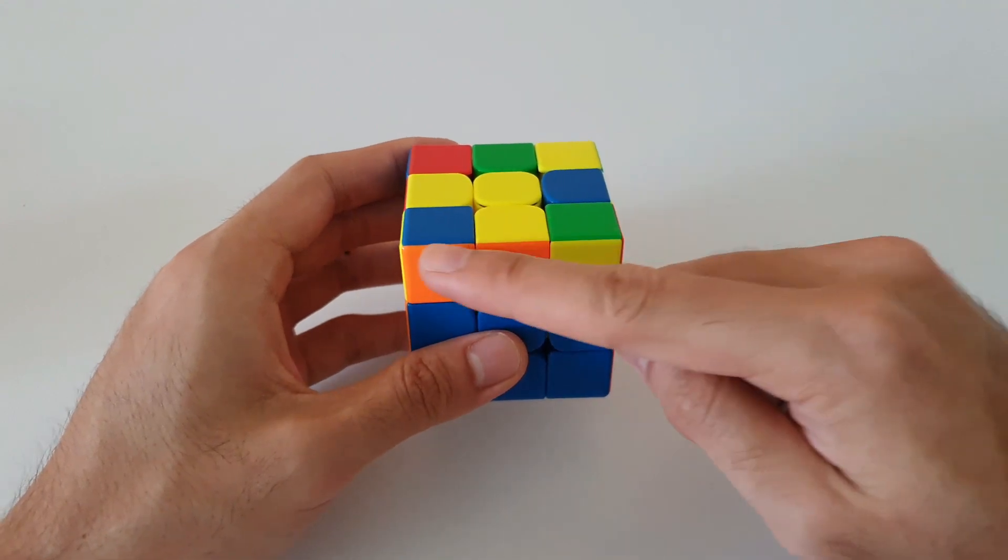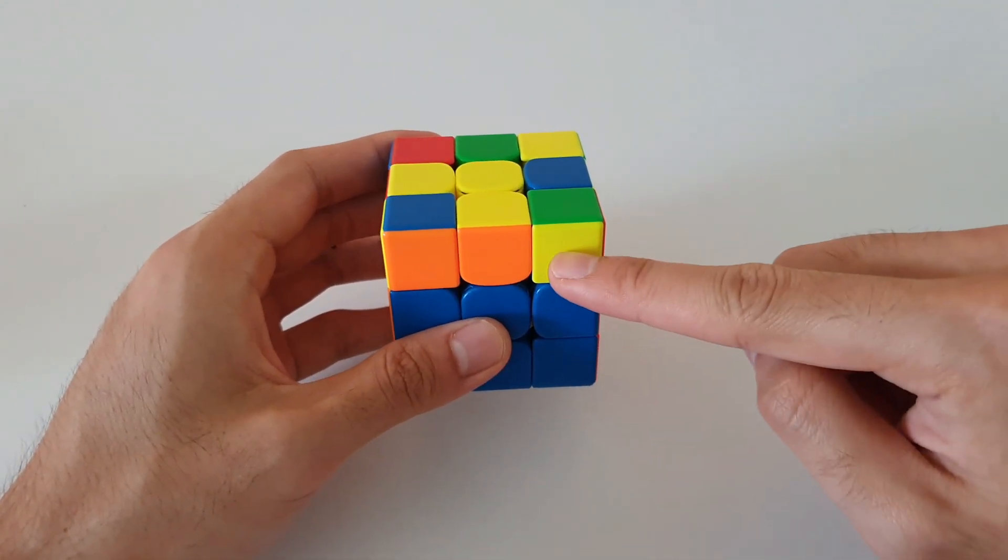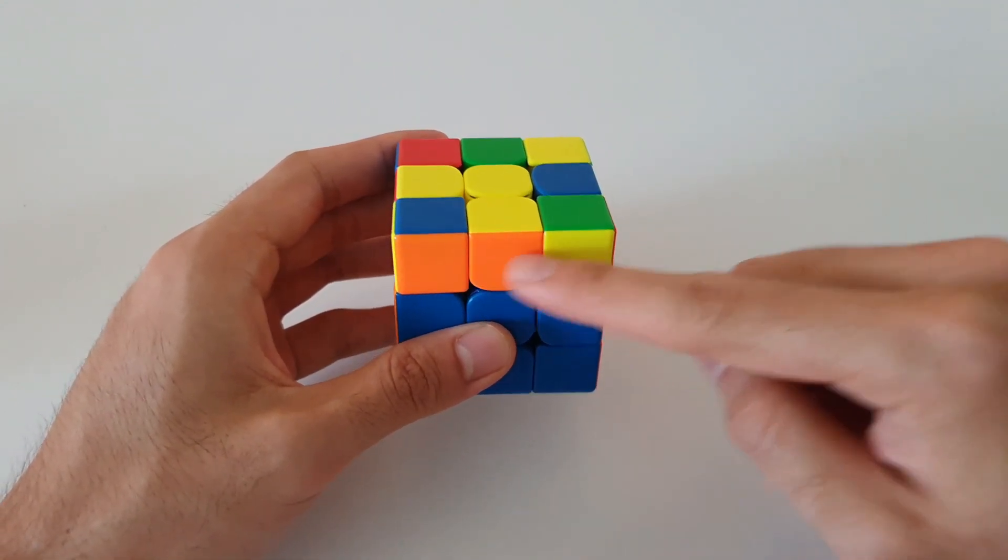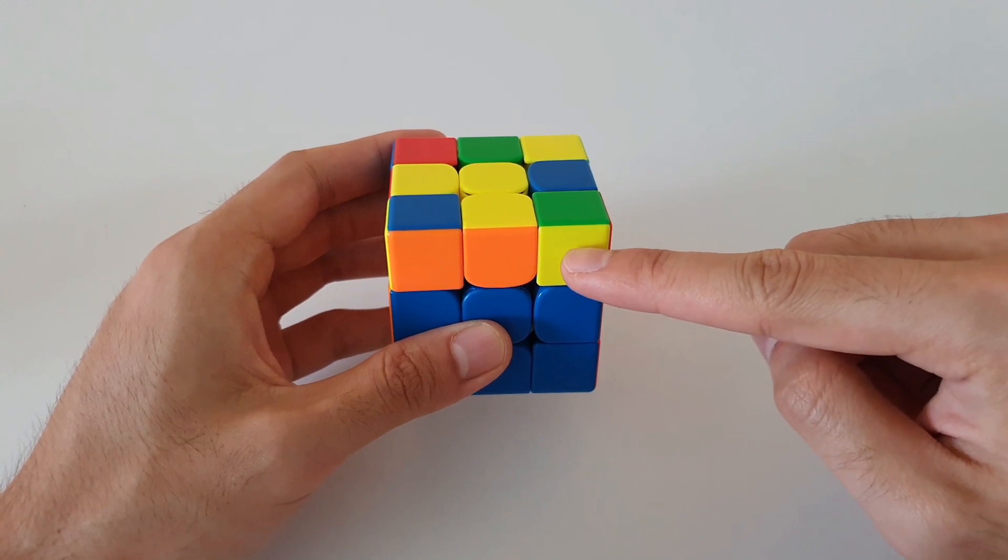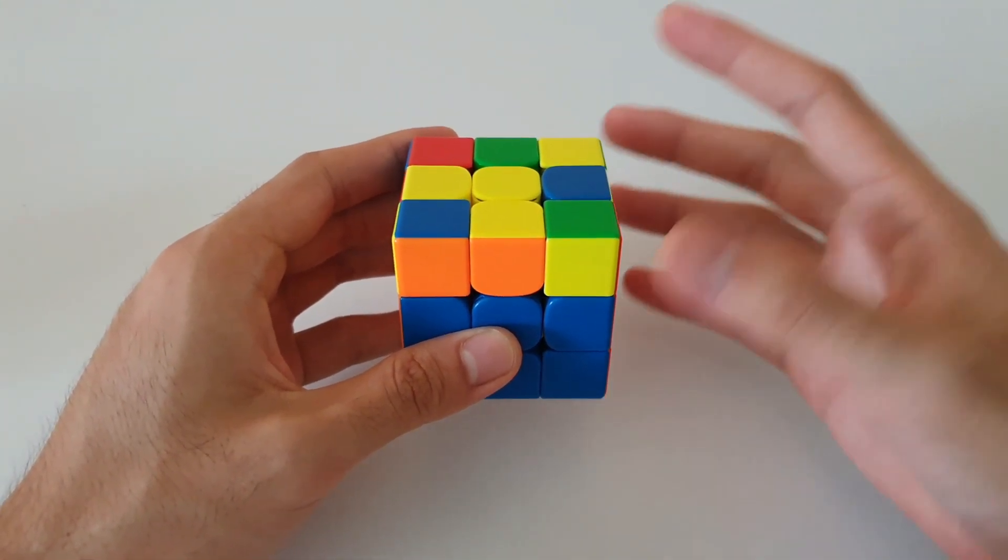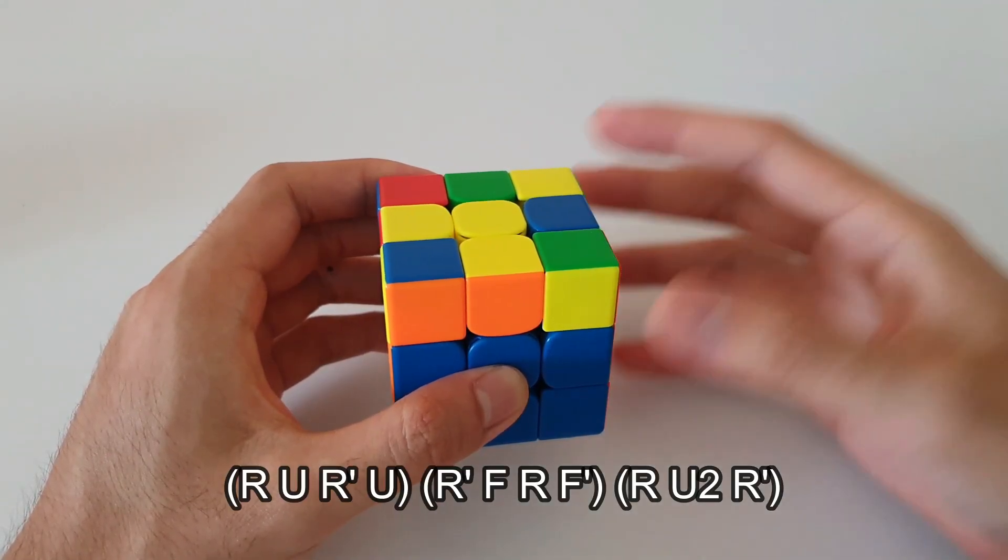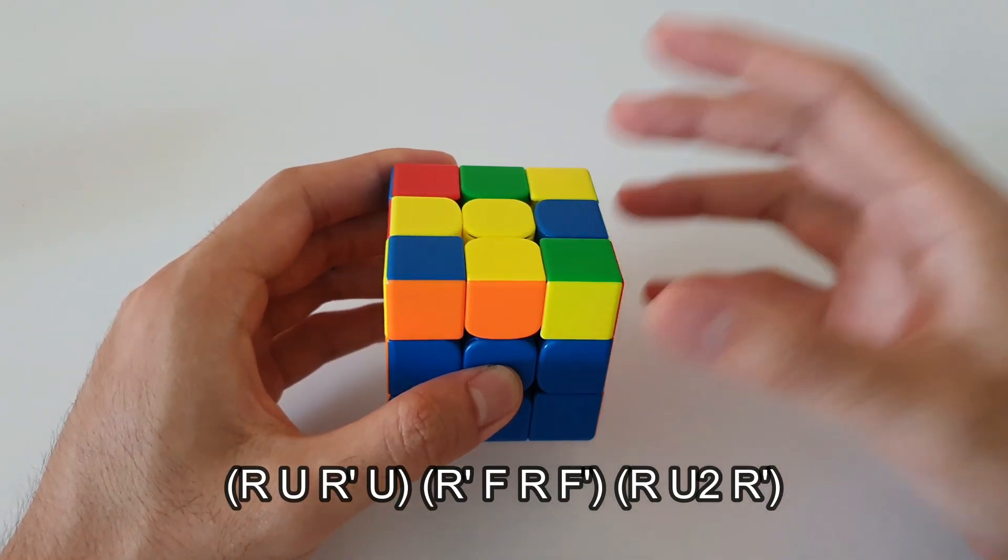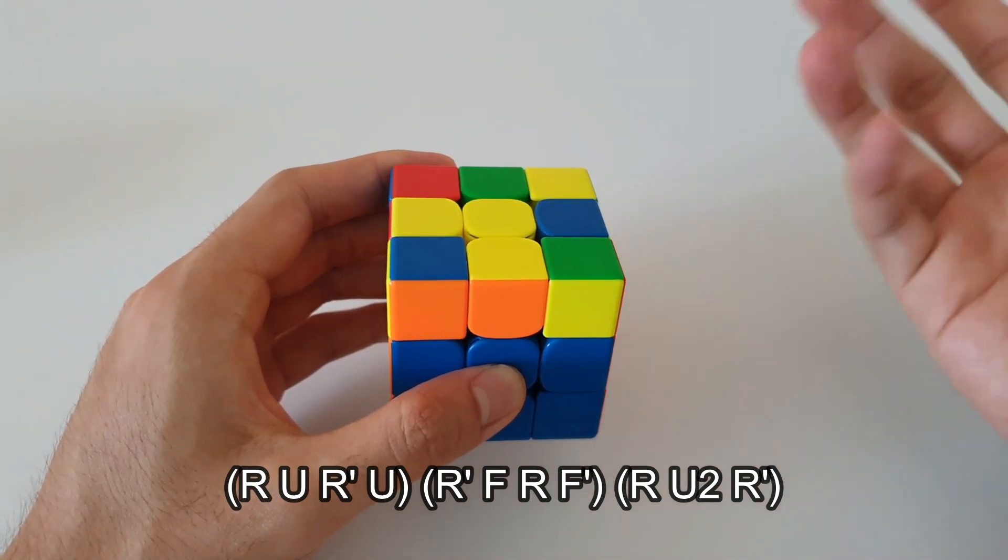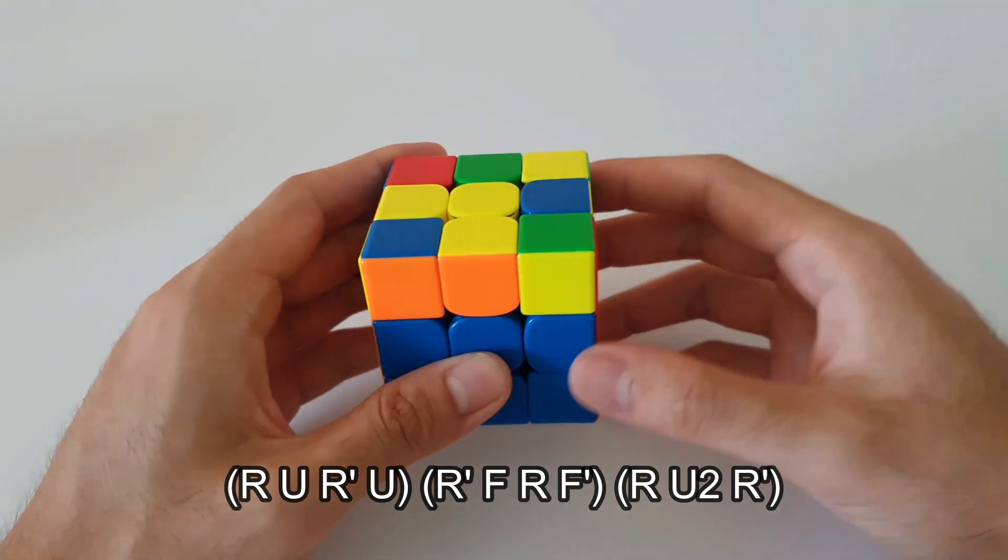Next up, you want to look at the front and look for the yellow corner at the front. Because this yellow corner is on the right side, that should remind you that this is the right handed version of the case. Now the algorithm may seem a bit long, but it can be broken down into very small parts that are very easy to remember.